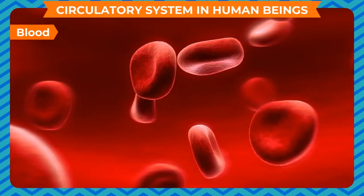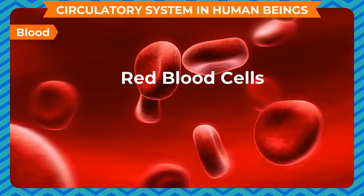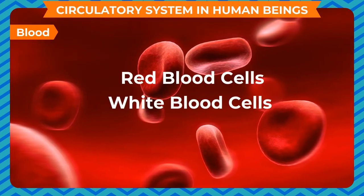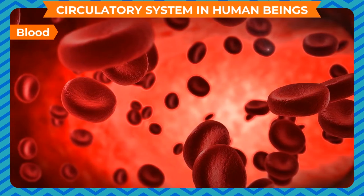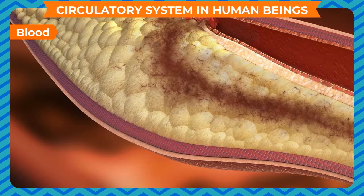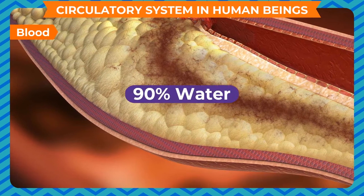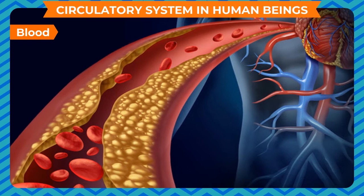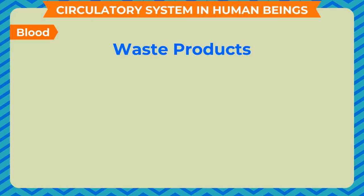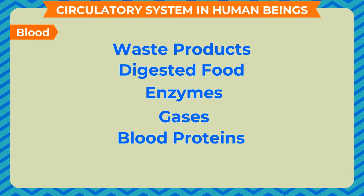Blood is a fluid tissue. It has red blood cells, white blood cells and platelets floating in a liquid called plasma. Plasma is a yellowish fluid and contains about 90% water. Plasma is a solution of minerals, waste products, digested food, enzymes, gases, blood proteins and other substances.